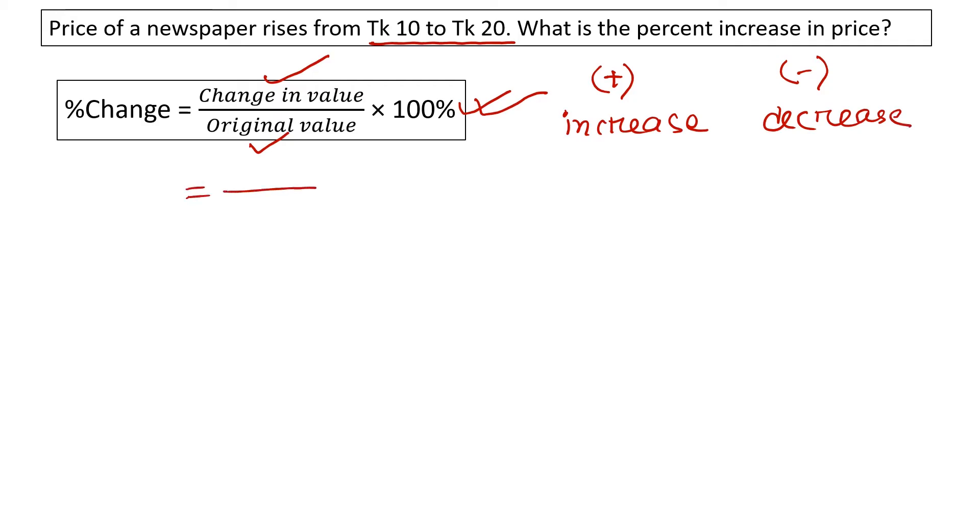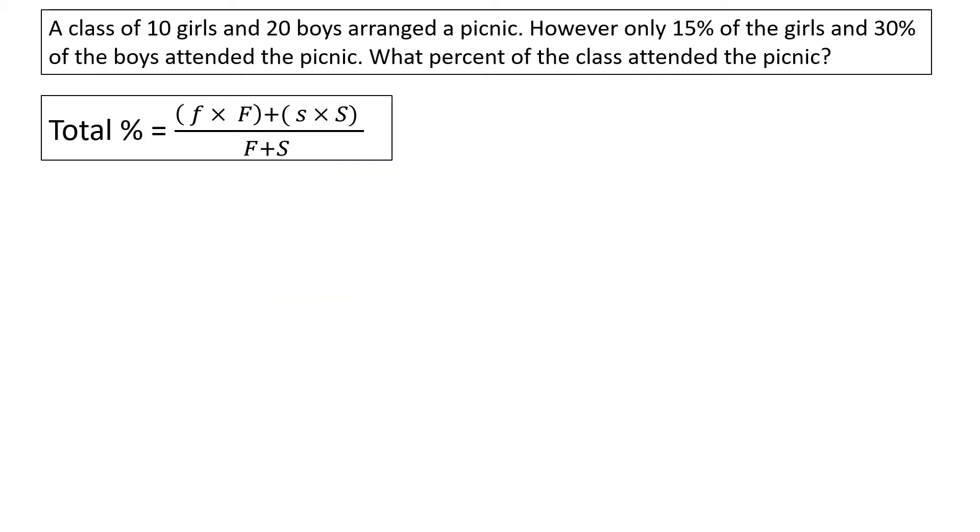The change in value is 20 minus 10, and the original value is 10. Using the formula percent change equals change in value divided by original value times 100%, we get 100% price increase.